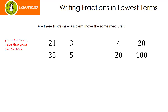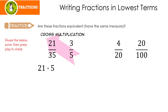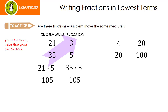All right, let's see how you did. Remember, we're going to cross multiply. That means we're going to take 21 times 5, which is 105. Then we're going to take 35 times 3, which is also 105. Since 105 equals 105, that means 21 over 35 also equals 3 fifths. They take the same amount of space.